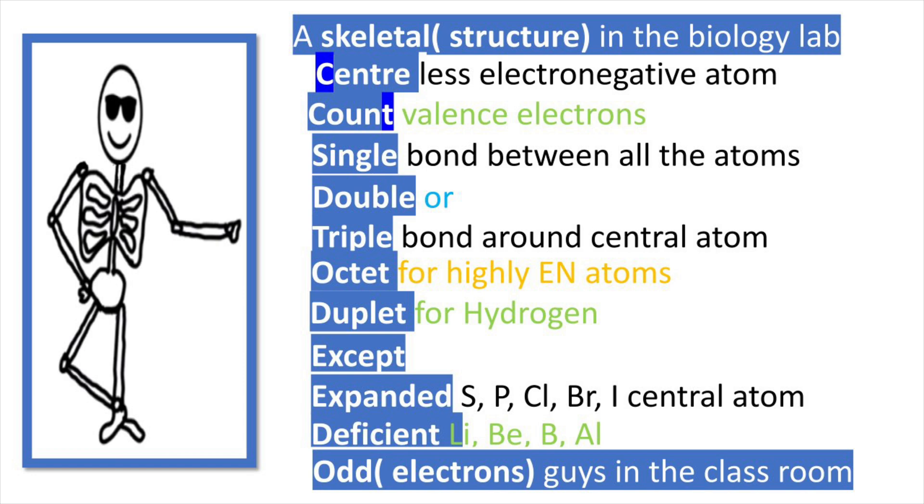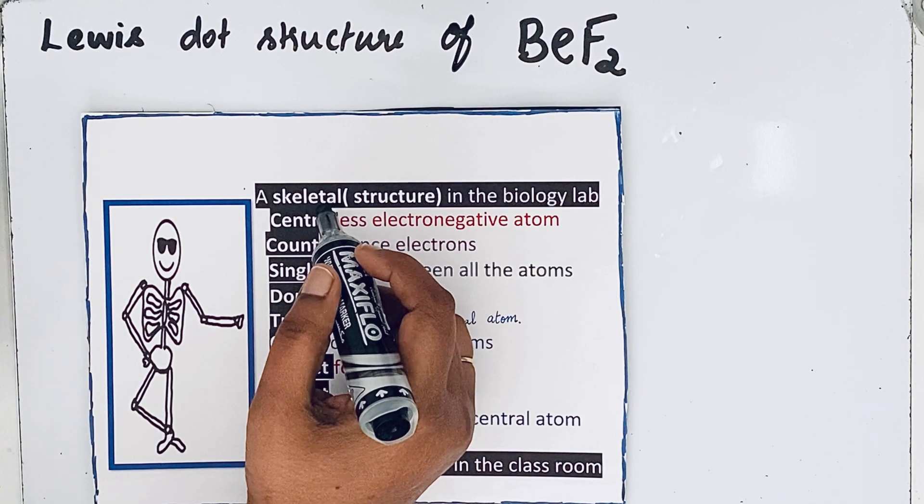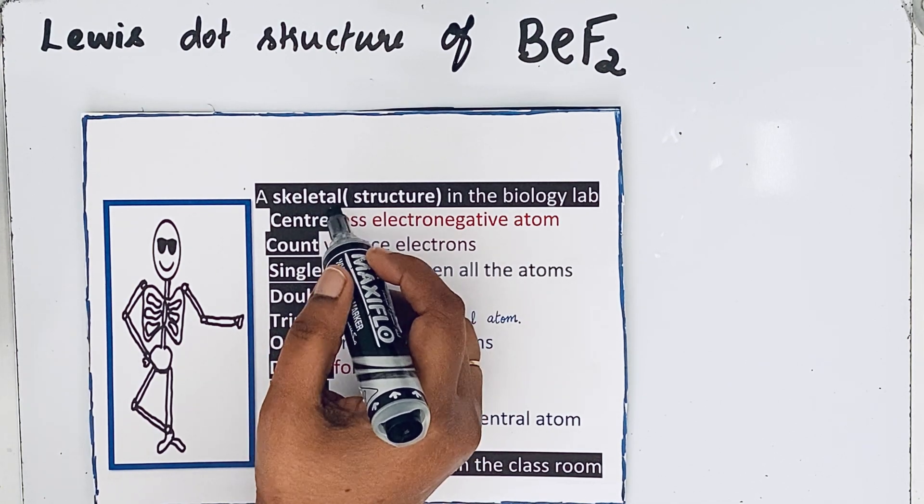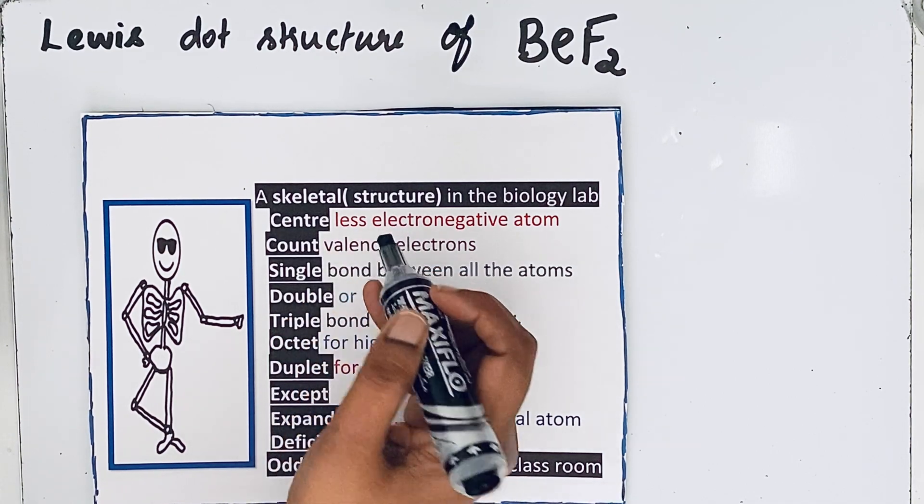Look at the first step: a skeletal in the biology lab is skeletal structure, so we go to draw the skeletal structure. When you draw the skeletal structure, look at the second step: your center should be less electronegative atom.